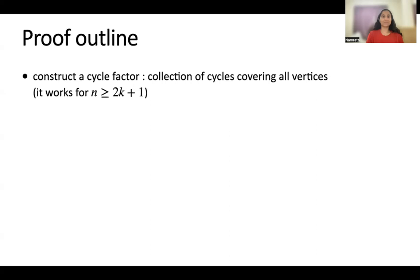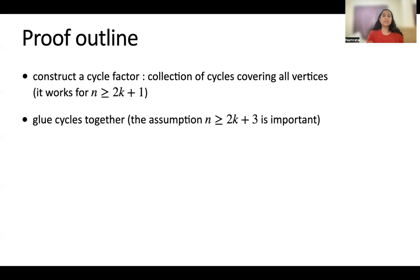Let me give a proof outline for the construction of a Hamilton cycle in Kneser graphs. We construct a Hamilton cycle in basically two steps. In the first step, we construct a cycle factor — a collection of cycles that covers all the vertices of the Kneser graph — and this construction works for n at least 2k+1. Once we have all these different cycles in a cycle factor, the next step is to join them together into one cycle. The sparsest open case is n equals 2k+3, and for gluing cycles together into one, the assumption that n is at least 2k+3 is important.